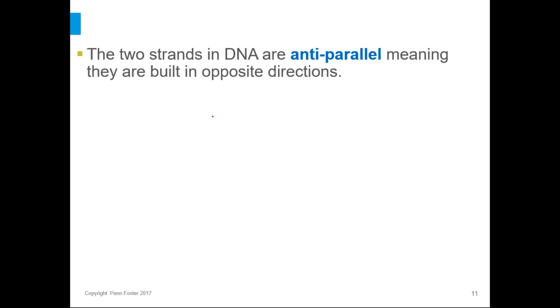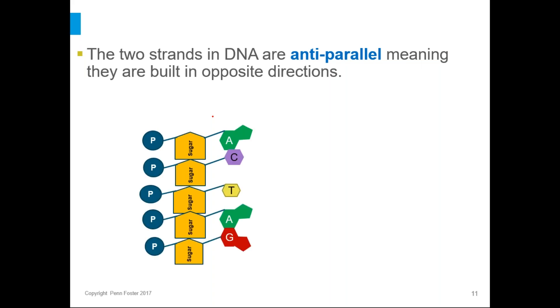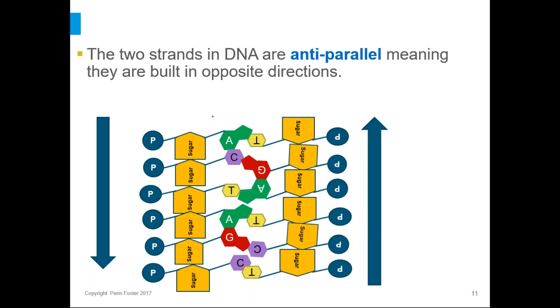Now because of the way they bond, the two strands in DNA are anti-parallel, and you can just think of that as being they are built in opposite directions. So we might have this first strand being built from top to bottom, and when its complementary strand, the one on the other side is built, it is going to be built from bottom to top. So it also has something to do with the direction in which these phosphates and sugars are built. But for what you need to remember is that they just go in opposite directions.